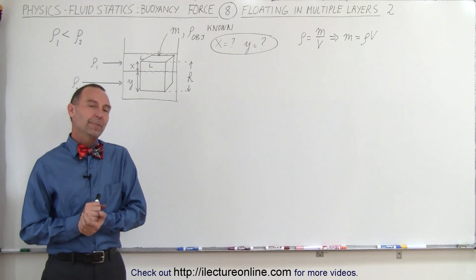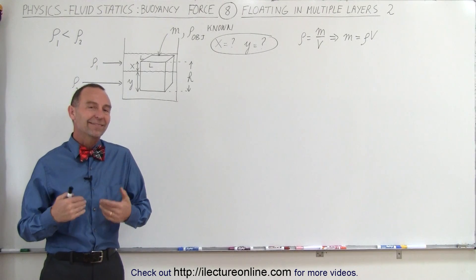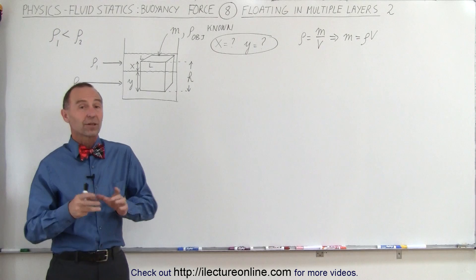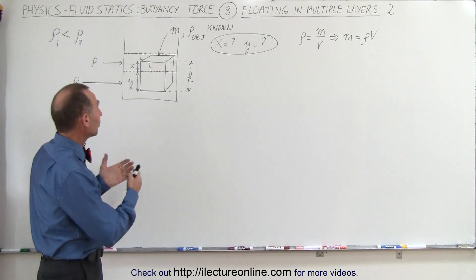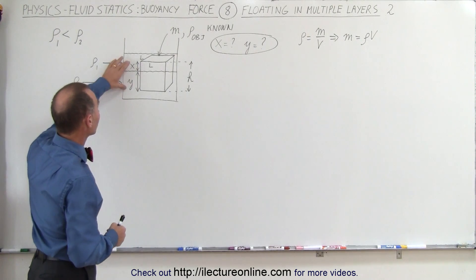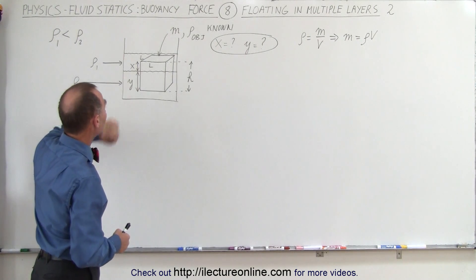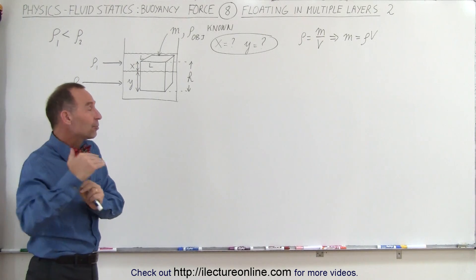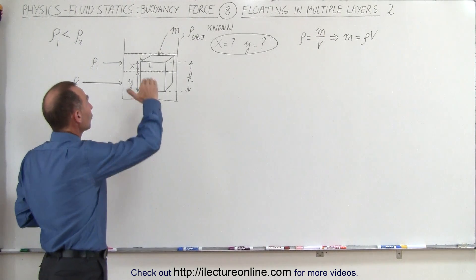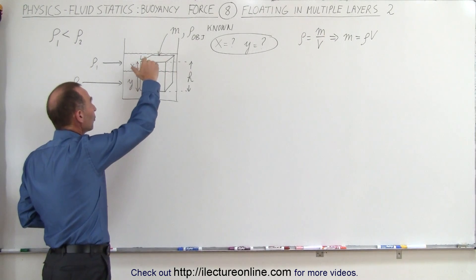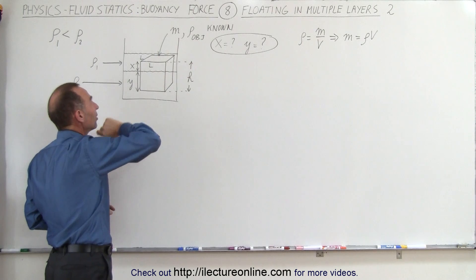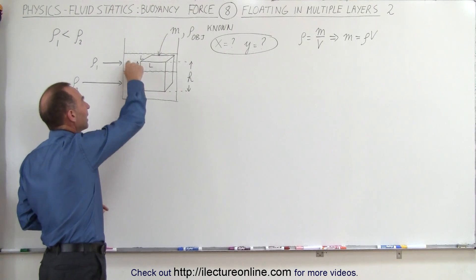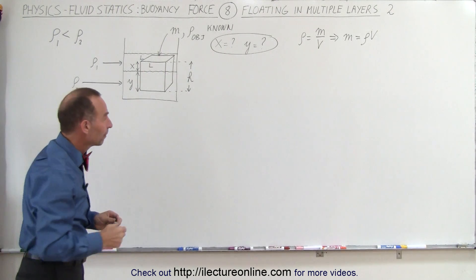Welcome to ElectronLine. Here we have a second case in which an object can be floating in a multi-layer substance or a multi-layer liquid. Notice in this case the entire object is below the top surface, but nevertheless it doesn't sink to the bottom because of the different densities between the two layers.